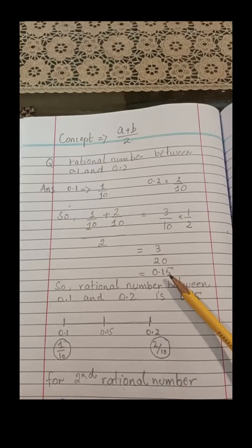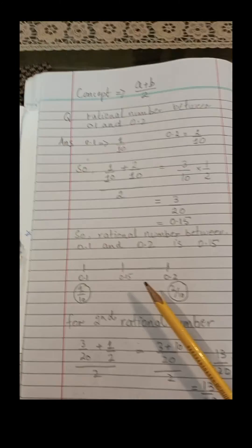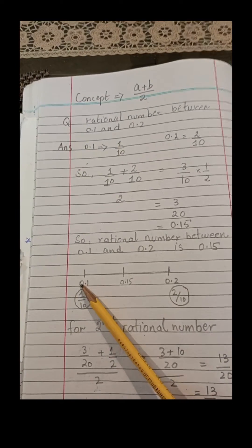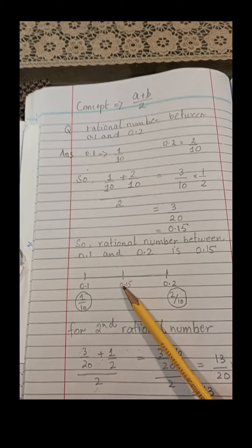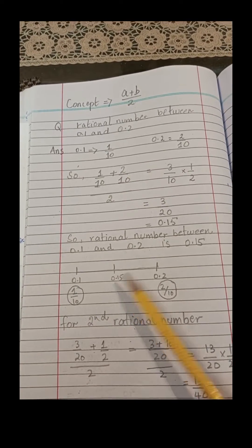For finding the second rational number, we can take values between 0.1 and 0.15, or between 0.15 and 0.2. It's up to you.